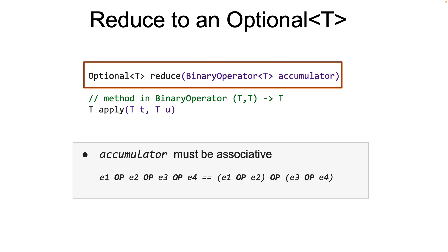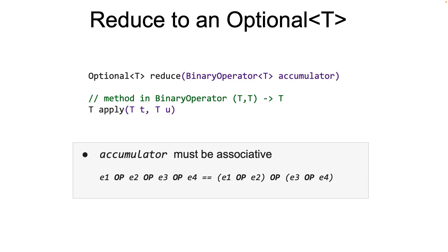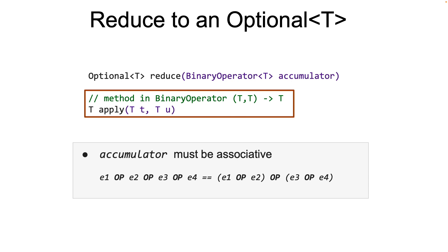Here's the signature of the simplest of the three reduce methods, which takes in what is called an accumulator function. Here in this signature, T represents the parameterized type of the stream interface, meaning the elements in the stream are of type T — it can be anything: integer, string, or any class or interface. The accumulator represents the binary operator that is applied to the elements of the stream. The binary operator takes in two parameters of type T and returns a type T. It's basically a BiFunction in Java.